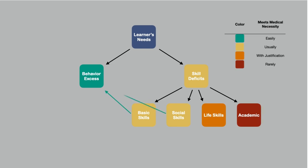If you can effectively relate skill deficits in any of these areas to the identified maladaptive behaviors, or explain how addressing the specific skill deficit will lead to a reduction in the lifetime cost of care, your goals will be approved. If you fail to make this connection, you have missed your opportunity to demonstrate medical necessity.